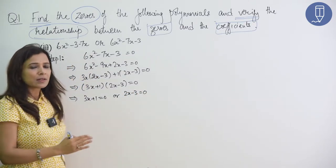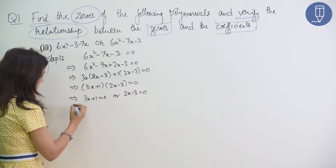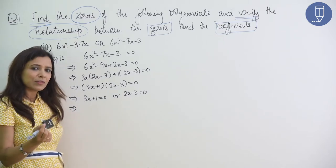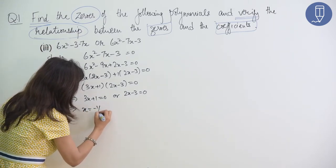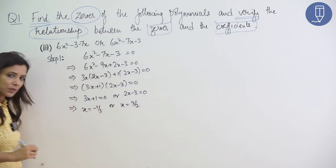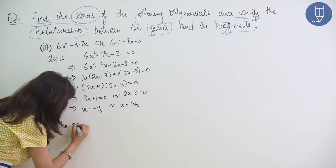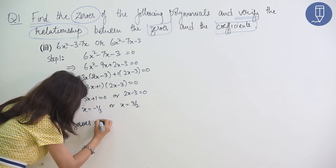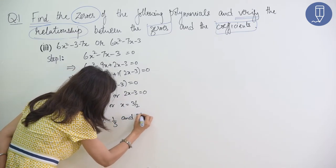So, 3x plus 1 equal to 0. And 2x minus 3 equal to 0. It will be standard step. You will see part 1, part 2, part 3. We will follow the same steps. And just difficulty level changes every time. x equal to minus 1 by 3. And x is equal to 3 by 2. Okay? So, therefore, the zeros are minus 1 by 3 and 3 by 2.